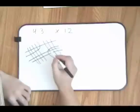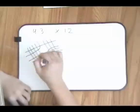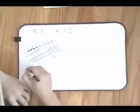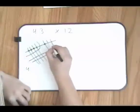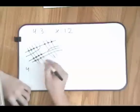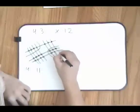Now just count out how many lines cross in each area. So it's 4, then 11 in the middle section, and then 6.